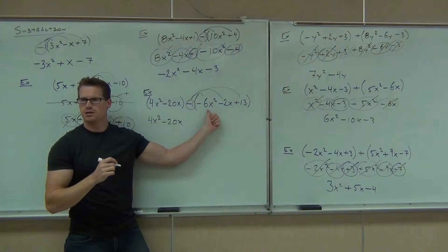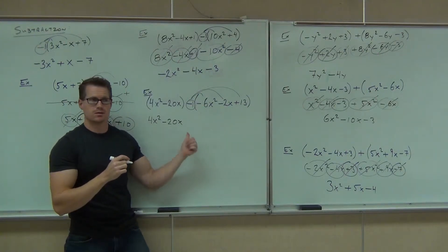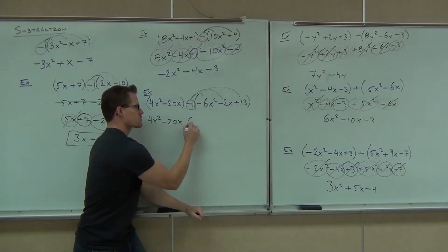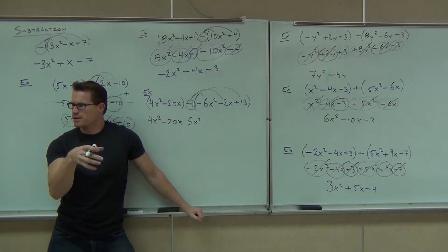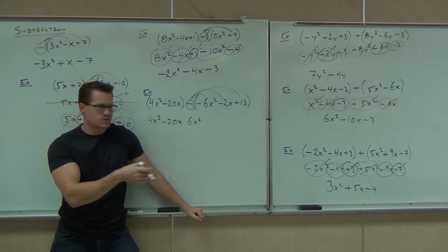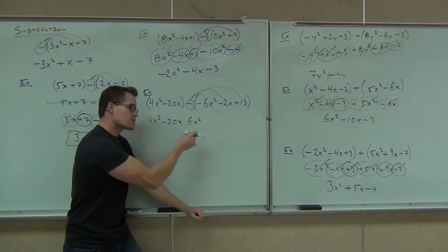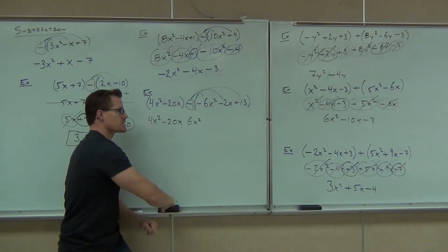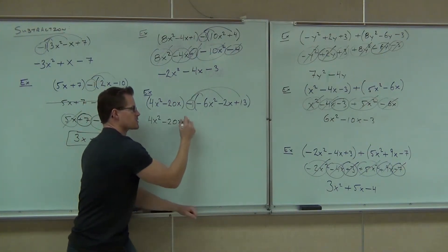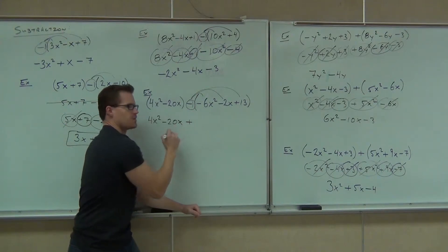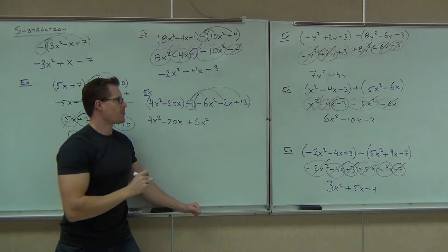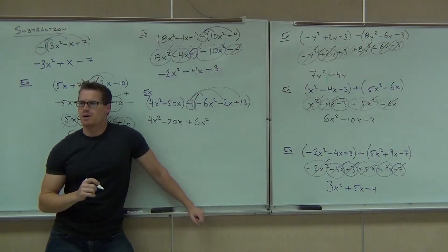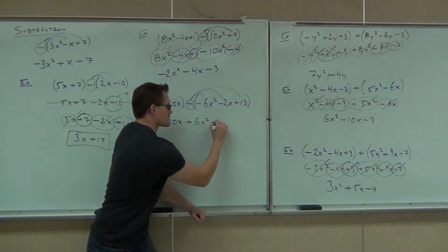What are you going to get? Are you going to just write 6x squared like that? No. There's got to be a sign in between there. So if we're getting a positive 6x squared, don't just write positive 6x squared — that positive should translate to a plus. So negative times a negative gives us a positive; we write a plus. What's next? Negative 2x or positive 2x? Positive 2x, so we'll write a plus 2x.